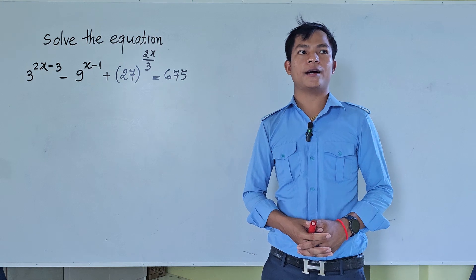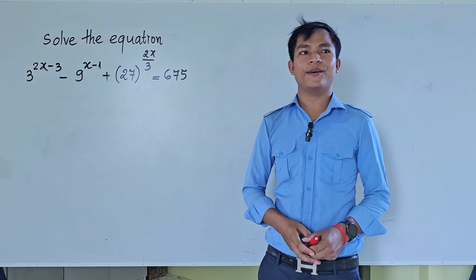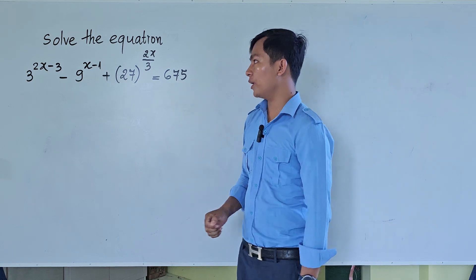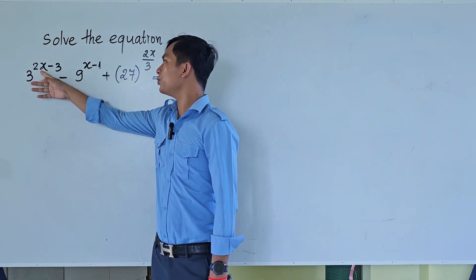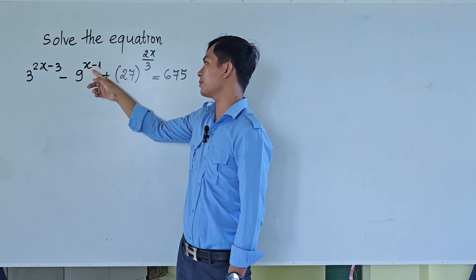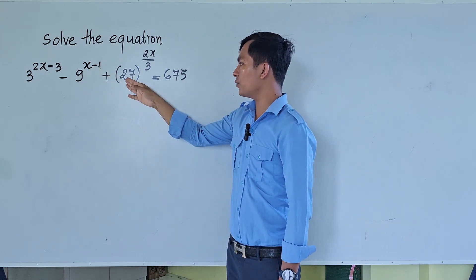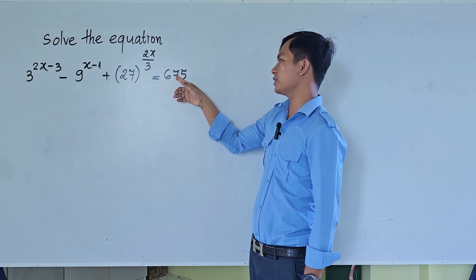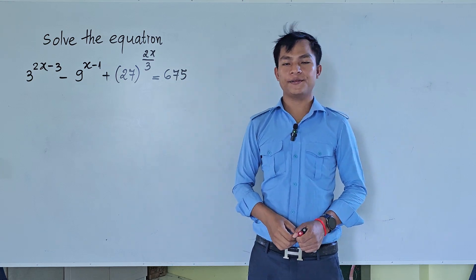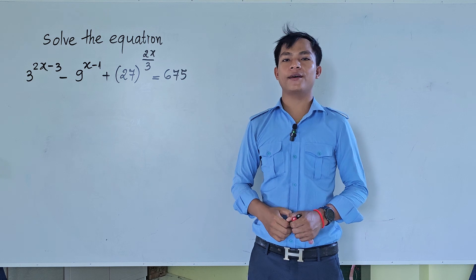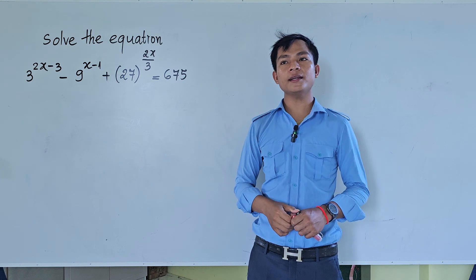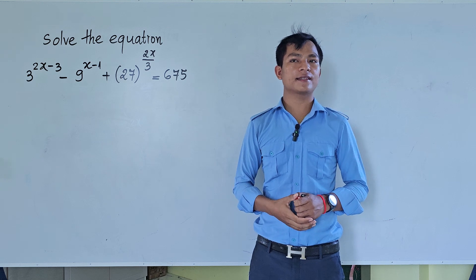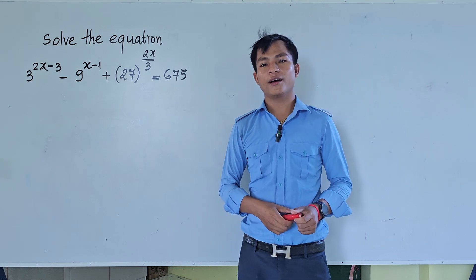Hello everyone, welcome to my YouTube channel. In this video we are showing you how to solve the exponential equation with 3 to the power 2h minus 3, and minus 9 to the power minus 1, plus 27 to the power 2h, divided by 3, equals 375. If you know how to solve this, please try it first, then come back to watch my video from beginning to end to find the solution. Please don't forget to subscribe to my channel for more exciting videos.